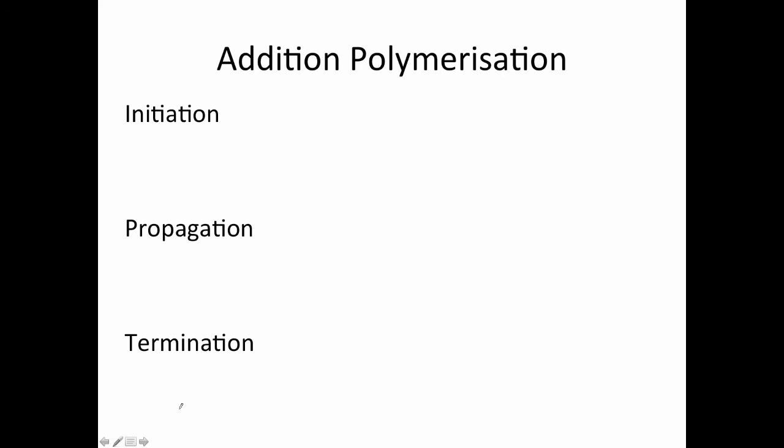The best way for us to learn how this curly arrow notation works is to put it into practice. Let's have a look at an initiation reaction. Let's imagine I have some sort of initiator that looks like this. It's got two separate components joined together by a bond.